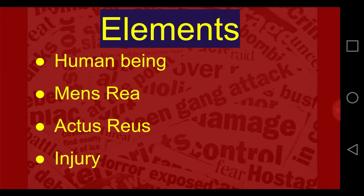If the injury happened not because of the action, it is not a crime. If the injury happened because of a non-human thing, it is not a crime. If there is no intention — if it happened accidentally — it is not a crime. If there is no action from the accused, it is not a crime.